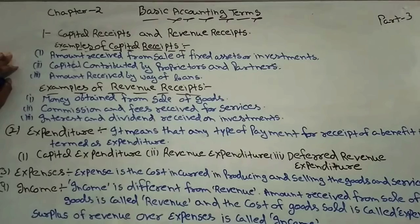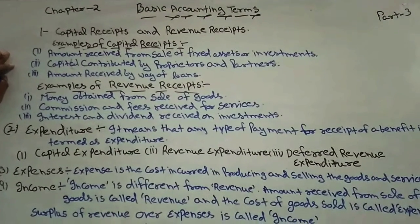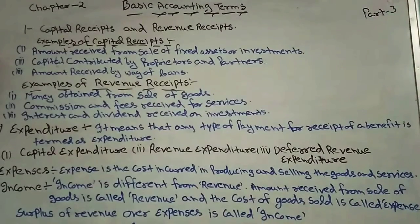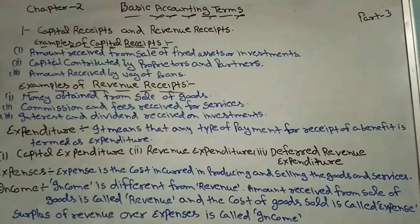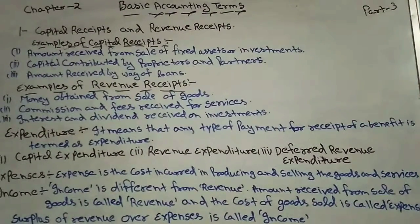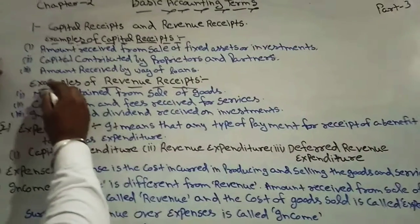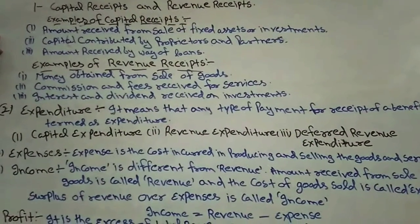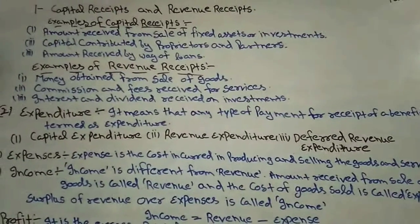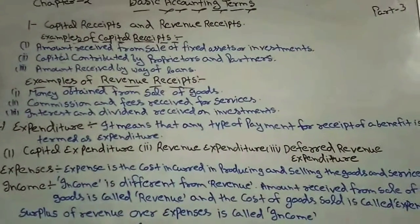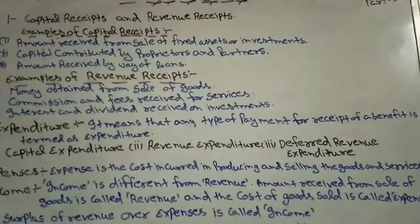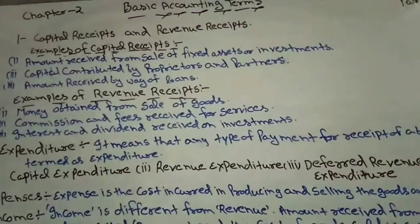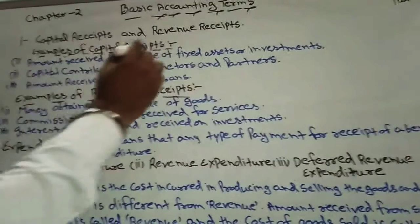The second point is capital contributed by the proprietor and partners. The capital contributed by the business owner, proprietor, and partners into the business is also called a capital receipt. The next point is amount received by way of loan. Any loan we receive from someone is also called a capital receipt.